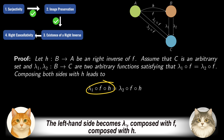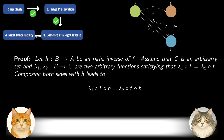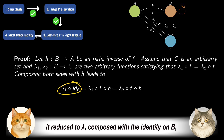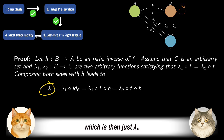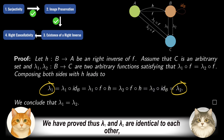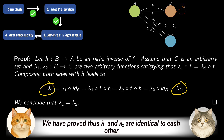The left-hand side becomes λ₁ composed with f composed with h. Since f composed with h is the identity function on B, it reduces to λ₁ composed with the identity on B, which is just λ₁. Similarly for the right-hand side, we have proved that λ₁ and λ₂ are identical to each other, establishing right cancellativity.